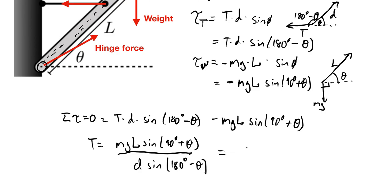The fans of trig identities will know that mgL over d times sine of 90 plus theta is going to be the cosine of theta. And the sine of 180 degrees minus theta is actually also the sine of theta. So this whole thing will go to tangent theta.